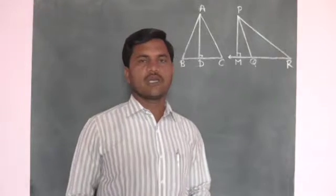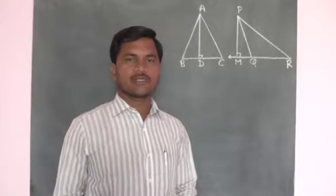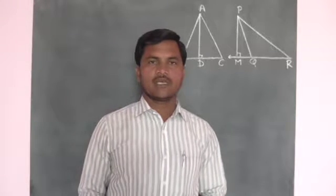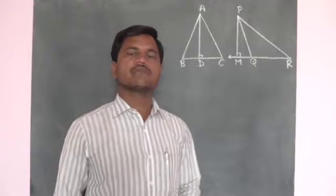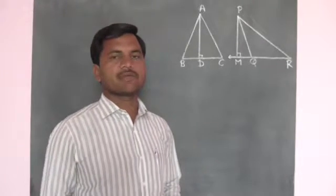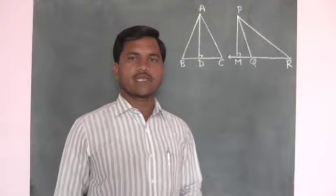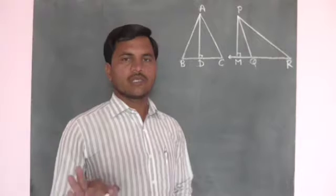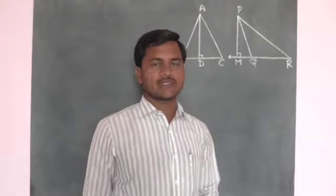Now we will discuss the property of ratios of areas of two triangles. There are four properties and we will study the first property. The first property states: the ratio of areas of two triangles is equal to the ratio of the product of their bases and corresponding heights.